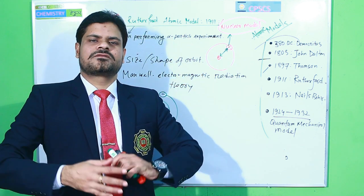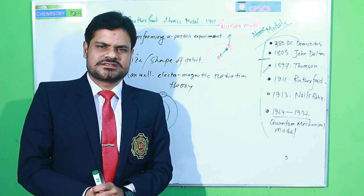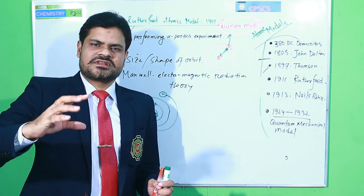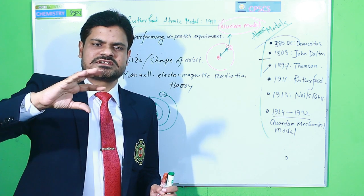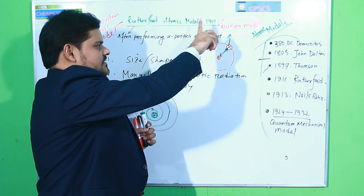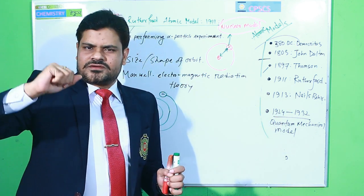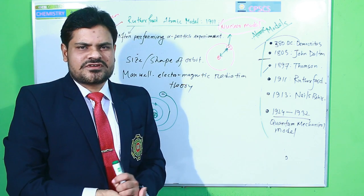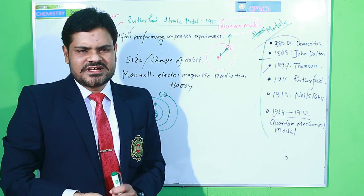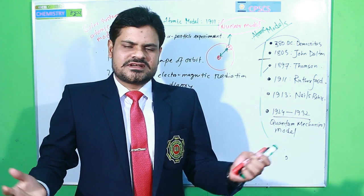Additionally, there is no explanation for the atomic spectrum in Rutherford's model. Furthermore, Rutherford's model describes the electron motion only for a single-electron atom. When multiple electrons are present, there is no idea about how those electrons move around the nucleus. These are the key limitations of Rutherford's atomic model.